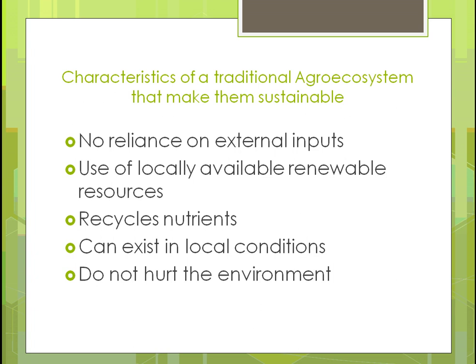Some characteristics of a traditional agroecosystem that would make it sustainable: you don't have to rely on external inputs, or at least reduce that reliance toward more natural ways. Using locally available renewable resources — putting in crops, leaving the soil undisturbed, and using maybe animals to do some of the harvest. That might work on smaller farms. Nutrients should be recycled — if you put cover crops in, they put nitrogen and other nutrients back into the soil.